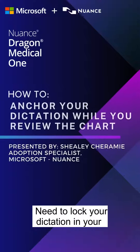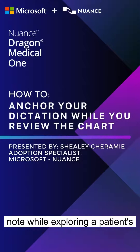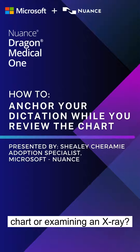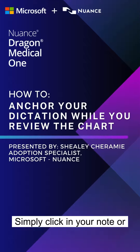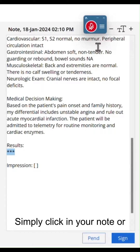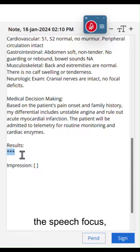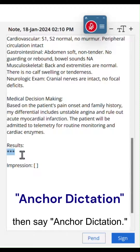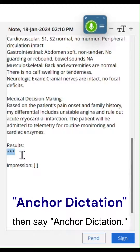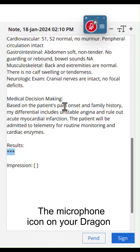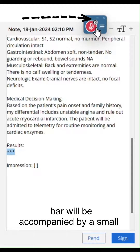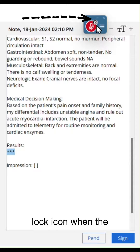Need to lock your dictation in your note while exploring a patient's chart or examining an x-ray? Try Anchor Dictation. Simply click in your note or the field you want to anchor the speech focus, then say 'Anchor Dictation.' The microphone icon on your Dragon bar will be accompanied by a small lock icon when the feature is activated.